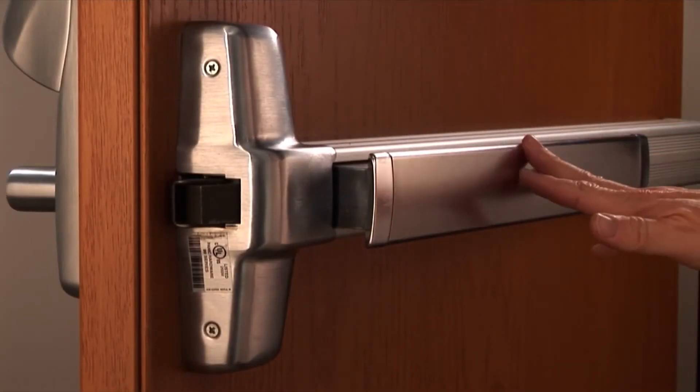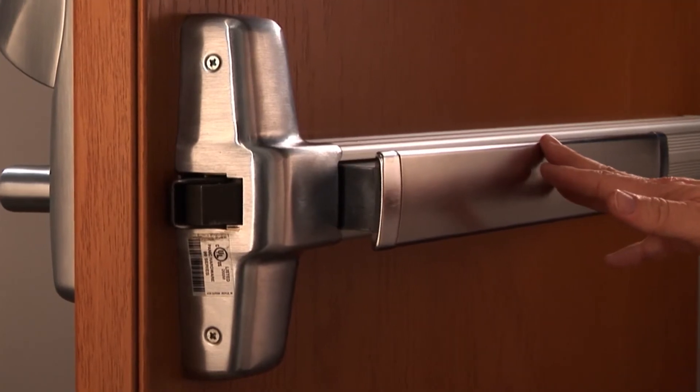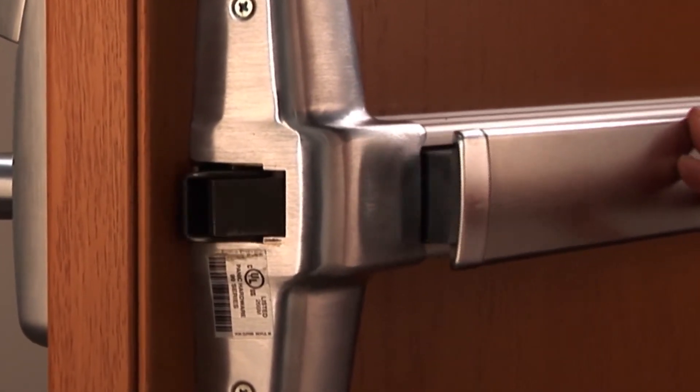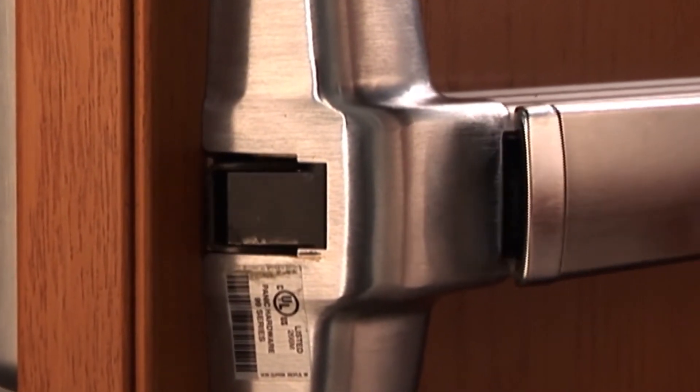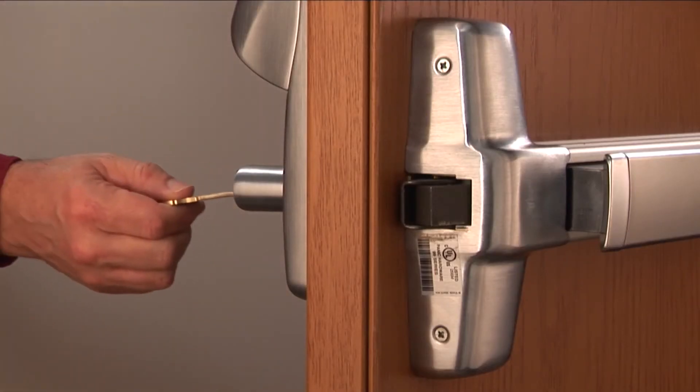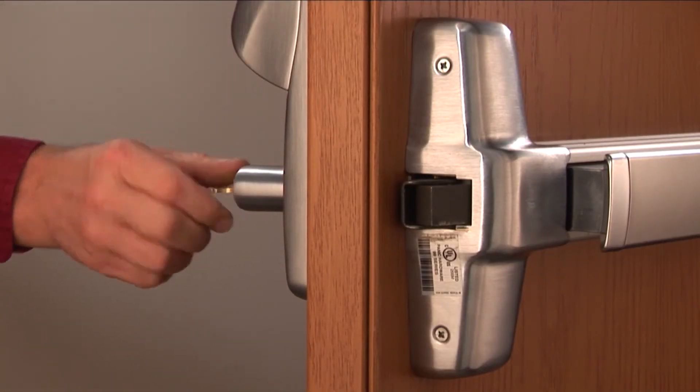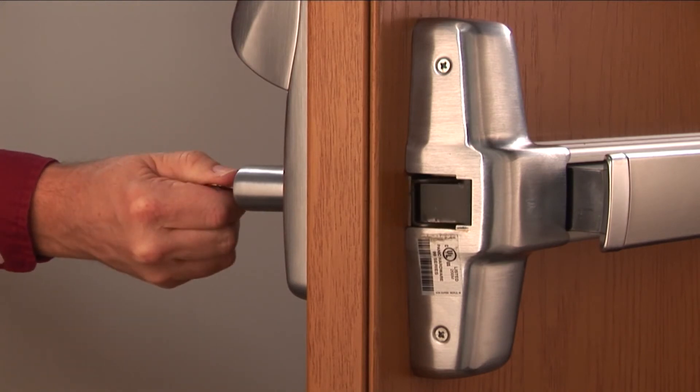To check for correct mechanical operation, depress the inside push bar and make sure the exit device latch fully retracts. On the outside lever, insert the key and turn to verify full latch retraction.